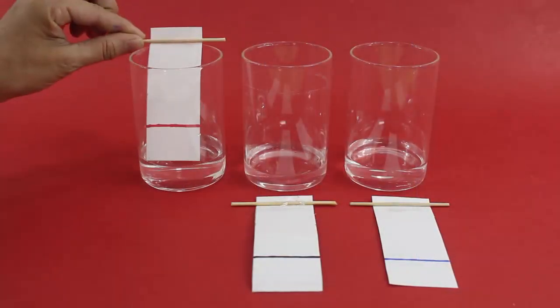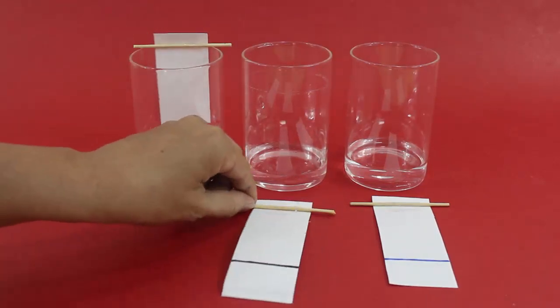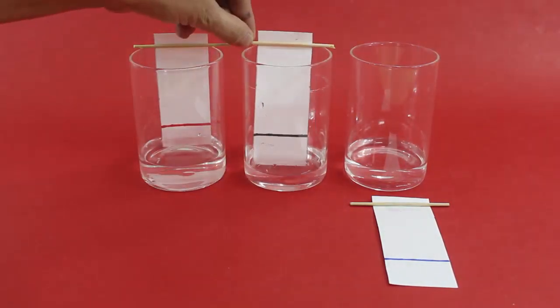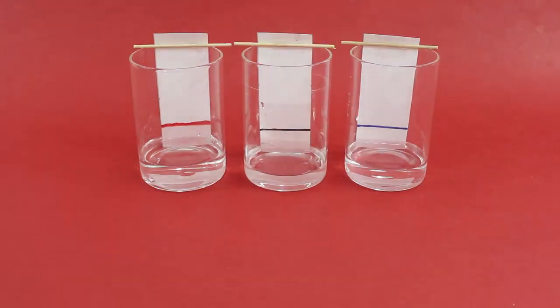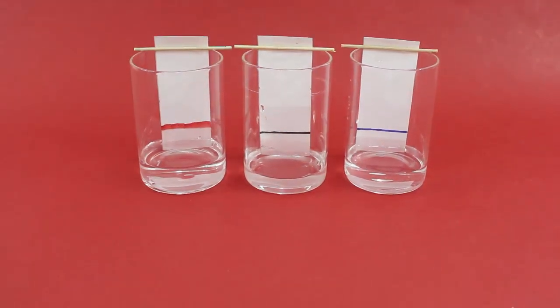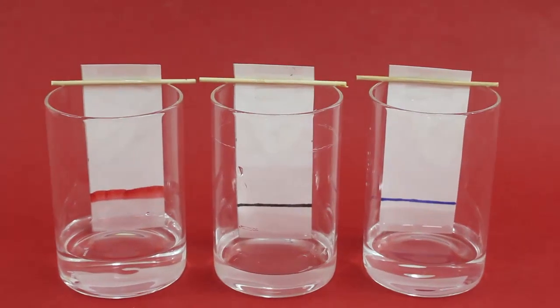Tape a wooden stick on the other end of the filter paper strip. Suspend the filter paper strips vertically in the glass as shown. Make sure ink lines remain about 1 cm above the water level.